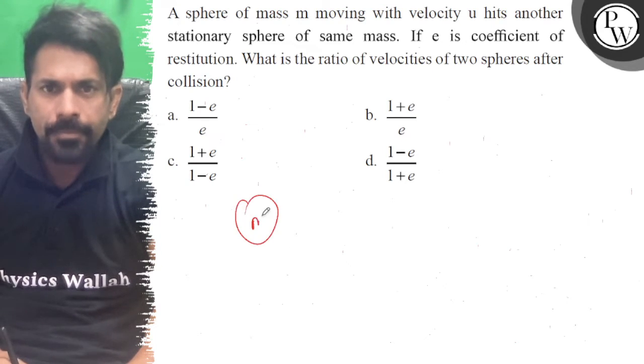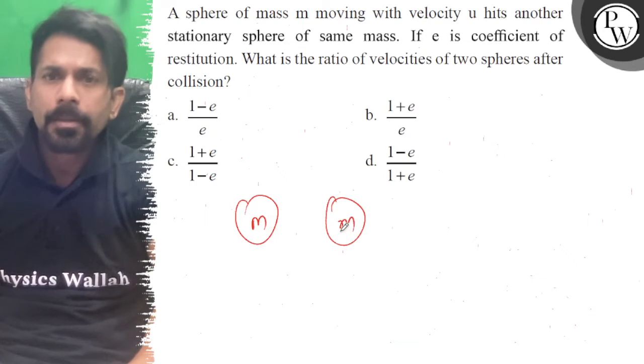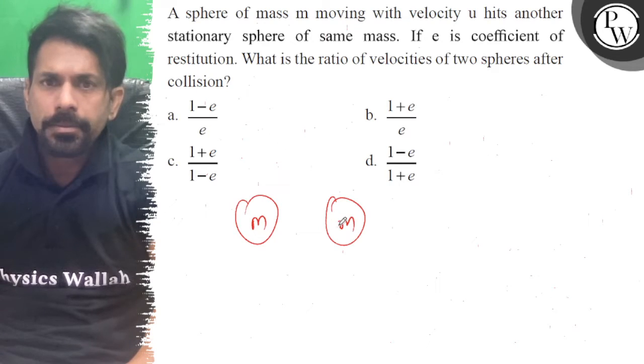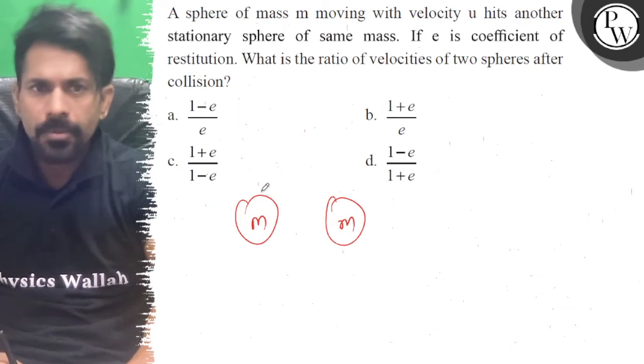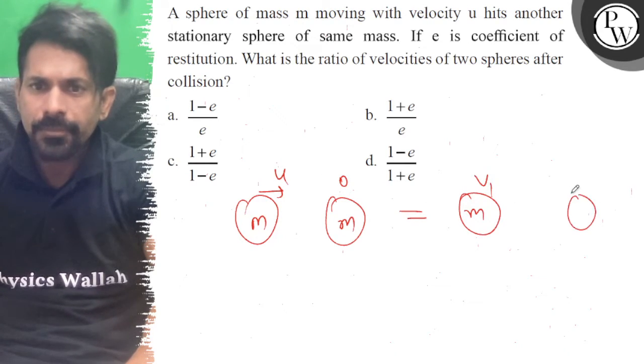So, mass m here and mass m here. This sphere has velocity u, this one is stationary. After collision, this will be v1 and this will be v2.